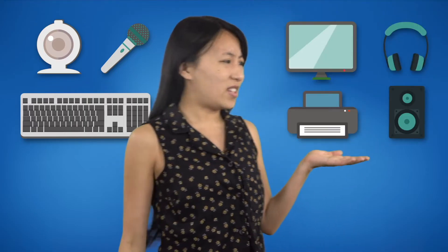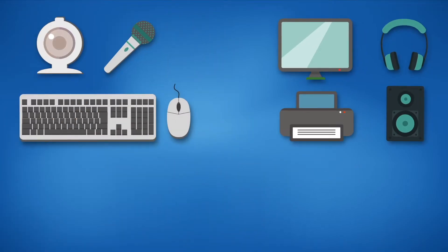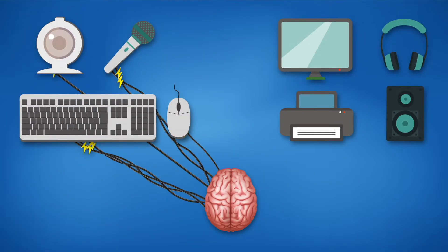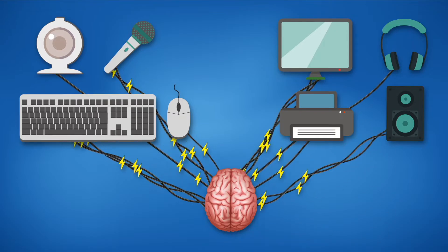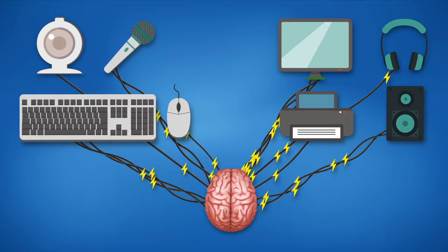At this point, you may be wondering: if these are input data, where is that data going? And if these are output data, where is that data coming from? Well, just like with people, the inputs are sending data to the brain, which then sends data back out through the outputs.